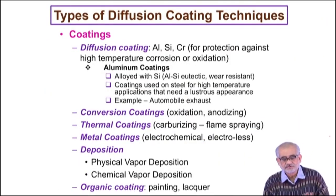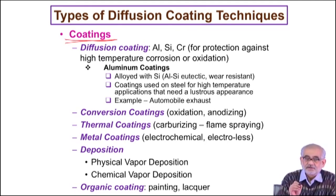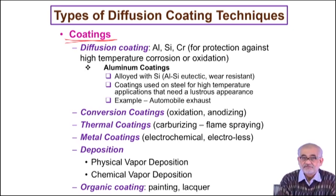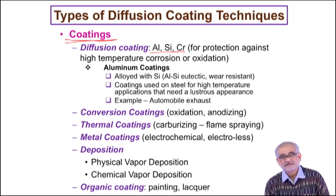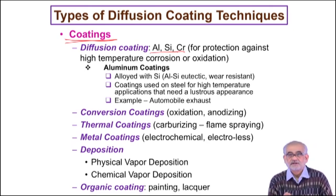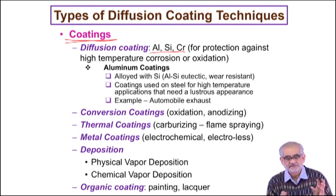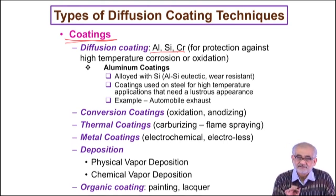This background was necessary for us to relate well to the process of diffusion coating. Coating is essentially the creation of an extraneous layer on top of an existing solid — it is an addition-based surface engineering. When we talk of diffusion coating, immediately we think about elements like aluminium, silicon, and chromium because these three elements have very high affinity for oxygen. In the Ellingham diagram of standard Gibbs energy as a function of partial molar energy of oxygen, the oxide lines for aluminium, silicon, and chromium are always much lower than all other oxide lines for metals.